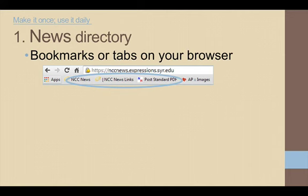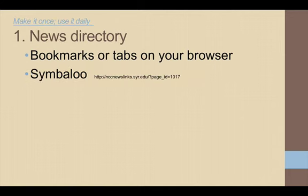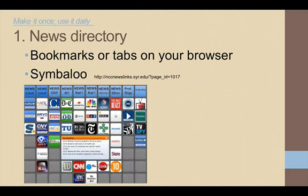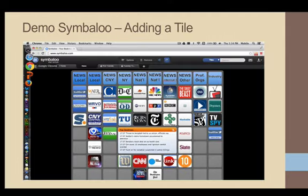Let me tell you about something new called Symbaloo, which is a web page that actually has tiles, and you click on any of these tiles and it links directly to that media outlet. So here, you can have dozens of websites, and you can actually make different pages. This happens to be the page I've made for news. So here's my Symbaloo, and it's one of what's called a web mix. I have several tabs, and you see I have it organized with various categories.